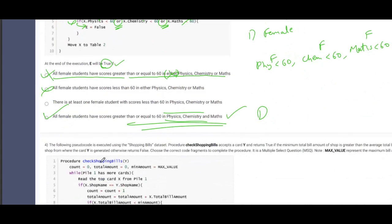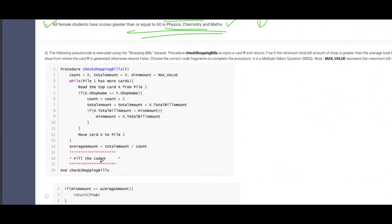Now coming to question number four. The following pseudocode is executed using the shopping bills data set. Procedure check shopping bills accepts a card Y and returns true when the minimum total bill amount is greater than the average total bill. If minimum is greater than average, then the answer is true.